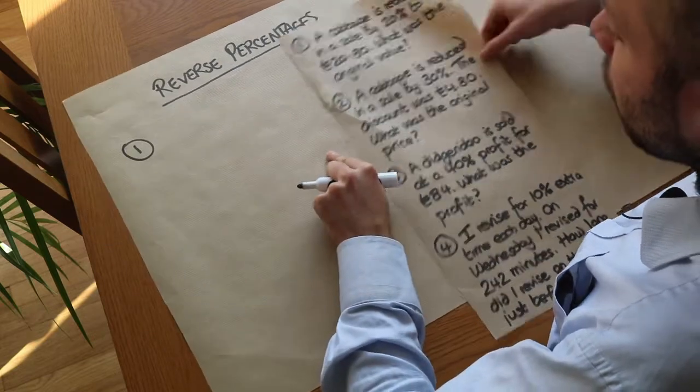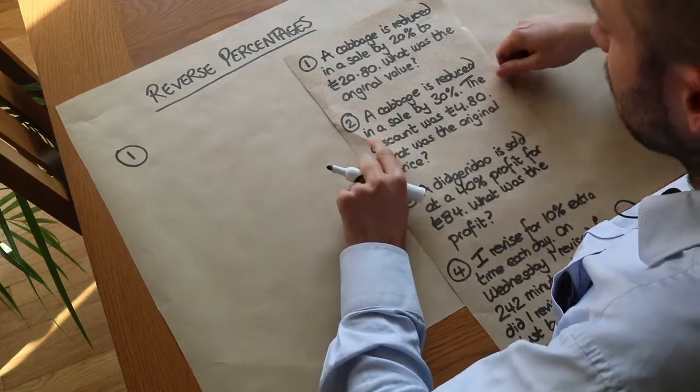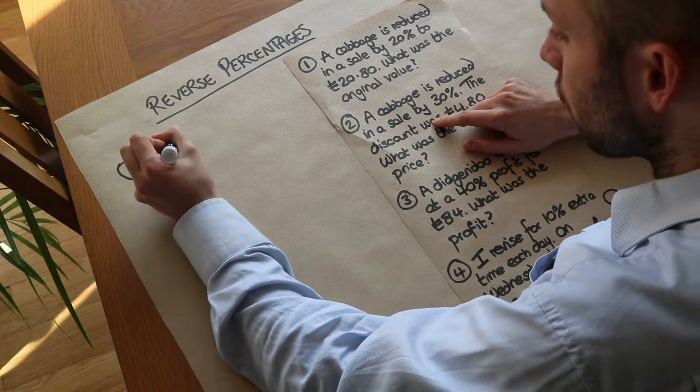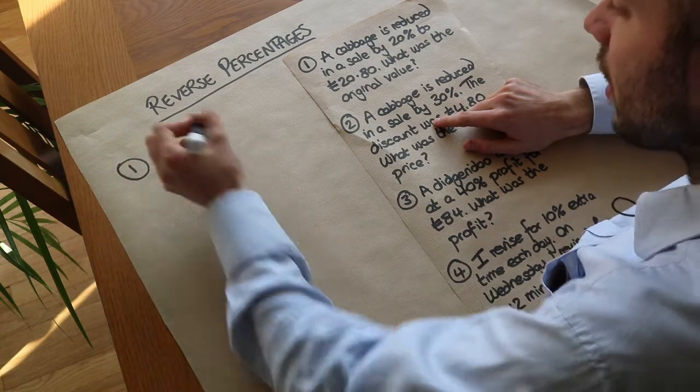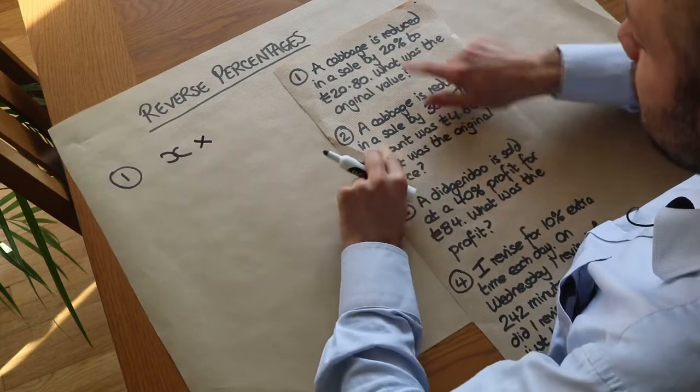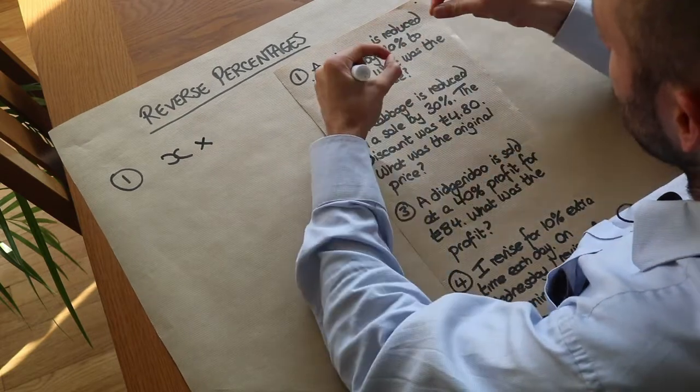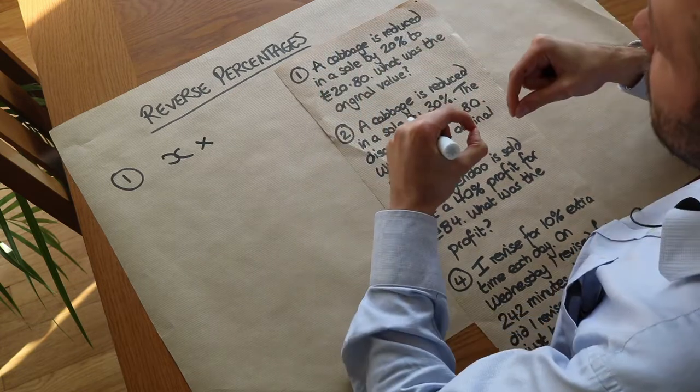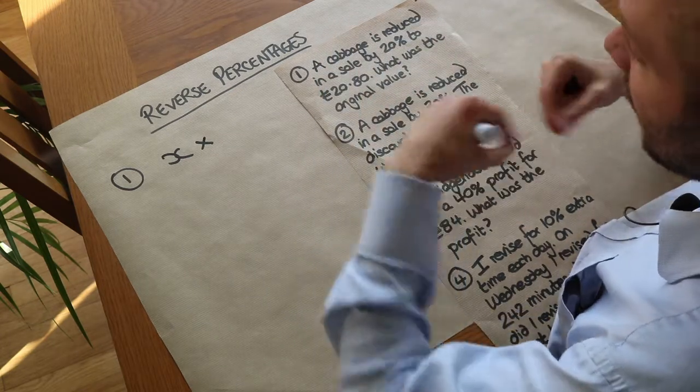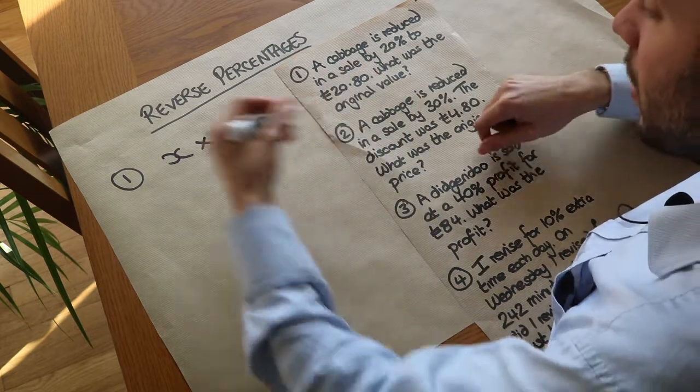Now there's two ways to do this. One way is using decimal multipliers and I prefer this way. So let's just say you've got your original amount and let's call it x, we don't know what it is. Now what would we times it by to reduce it by 20%?